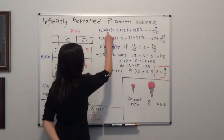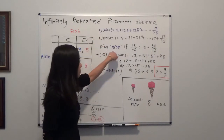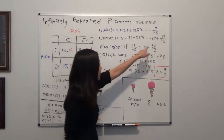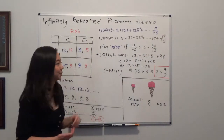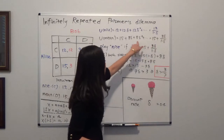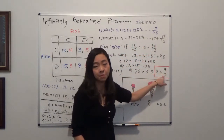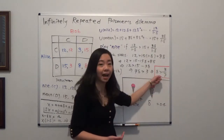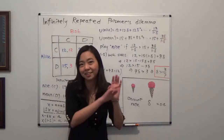Alice will choose to play nice if the utility of playing nice is higher than the utility of playing mean, meaning 12/(1−δ) > 15 + 8δ/(1−δ). The rest is algebra. The bottom line is that inequality holds if delta is greater than 3/7 — meaning if you are patient enough. The more patient you are, the bigger your delta. If you're comfortable with algebra, you can stop the video here.